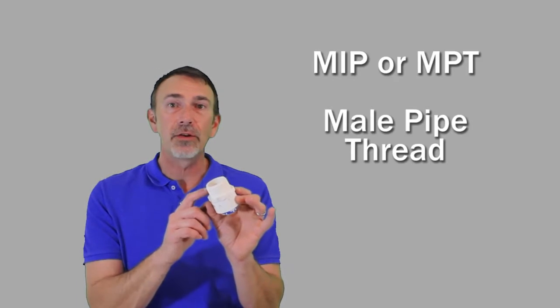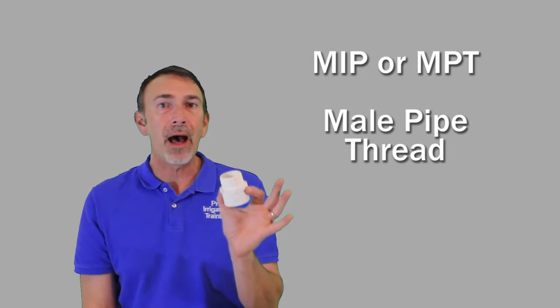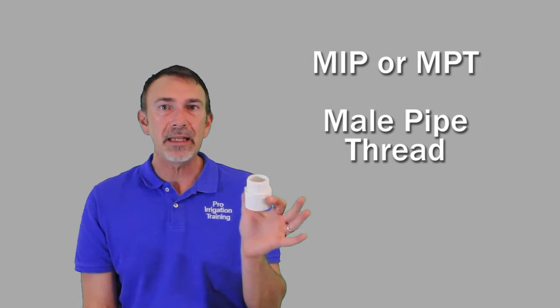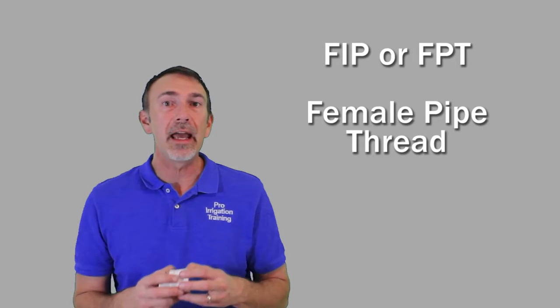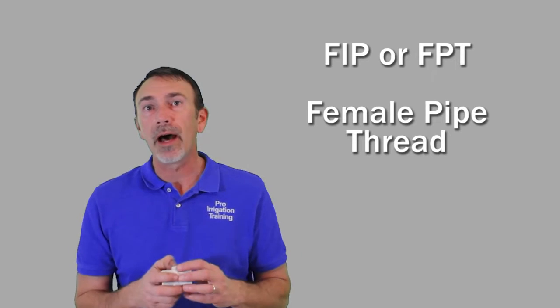Now, when you see these in the supply house, they're going to have the designation of, in this case, on a male, it's going to be called MIP or MPT, Male Pipe Thread. Or the female version of it is going to be called FIP or FPT, Female Pipe Thread.